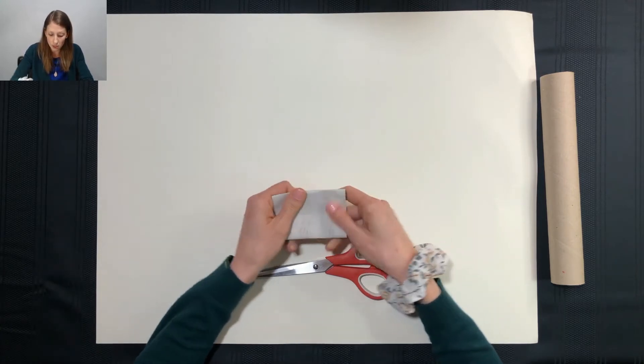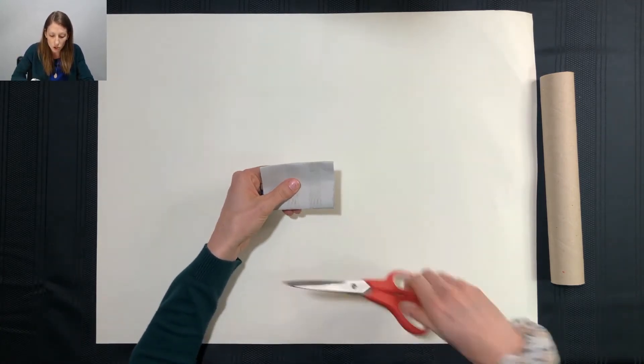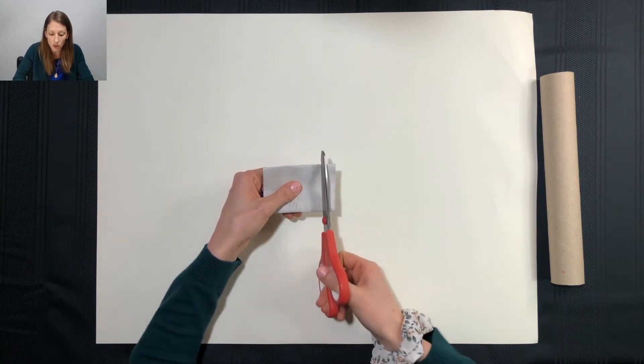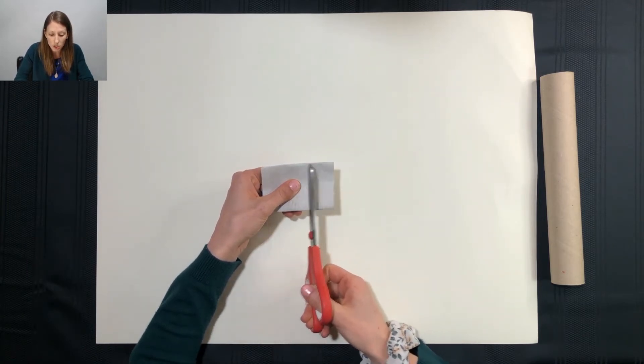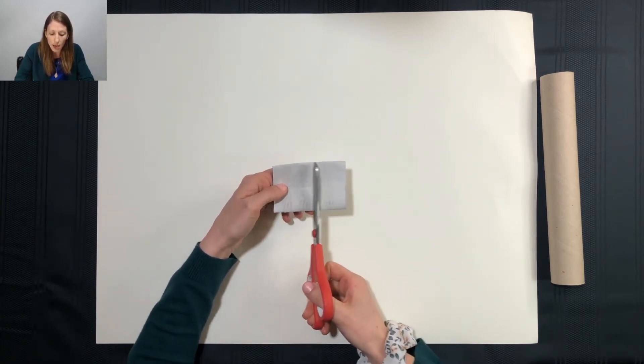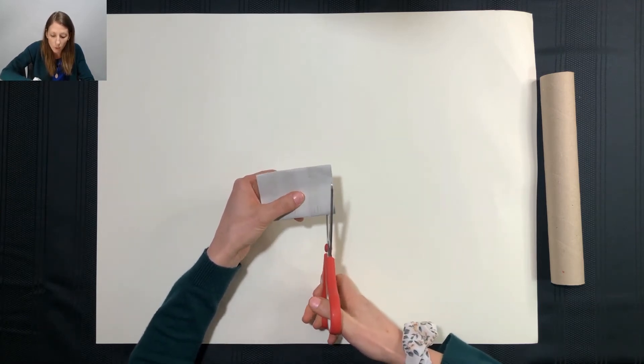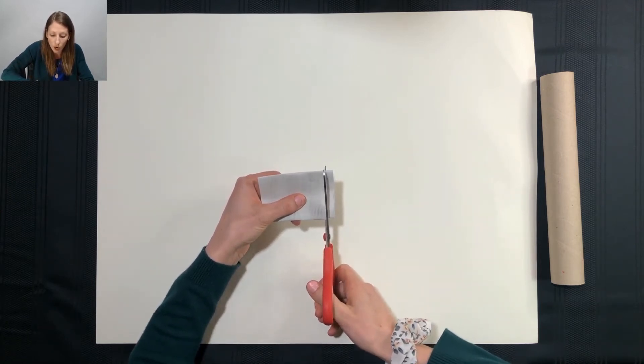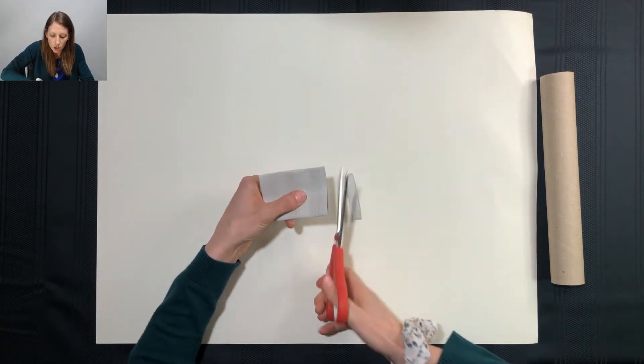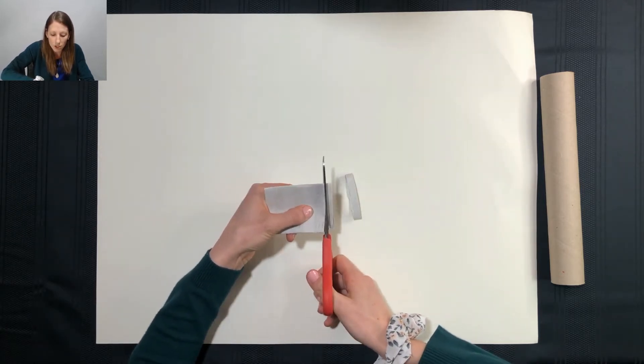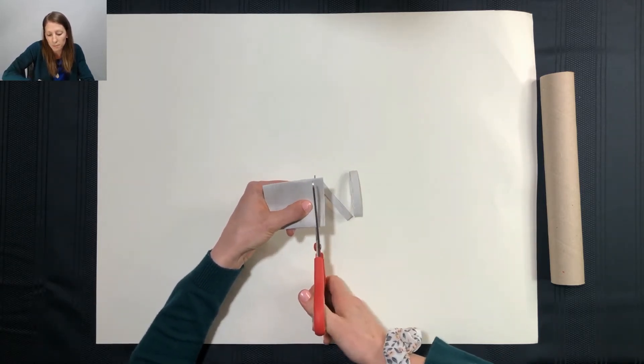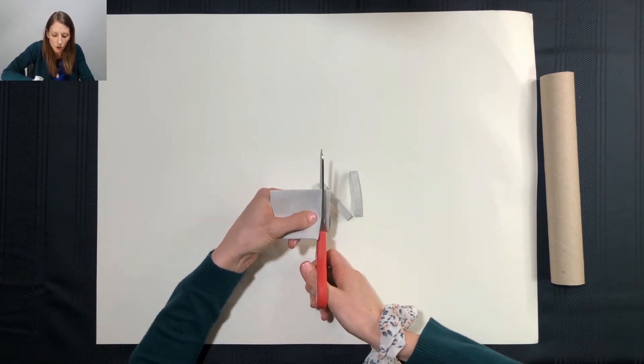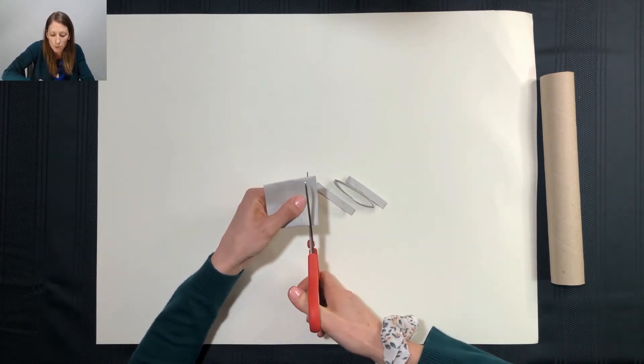I'm gonna go like this and then I'm just gonna cut straight across. These are just gonna be little sections and I'm just gonna cut most of this up and you can cut whatever width you would like. Just depends on what you're making. I'm just gonna try and cut some of them similar size so that I can show you the different shapes that you can create.